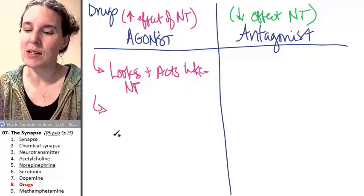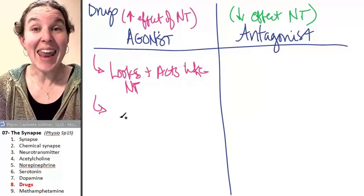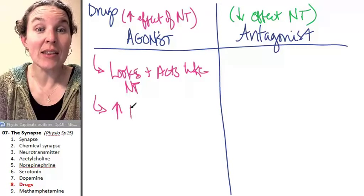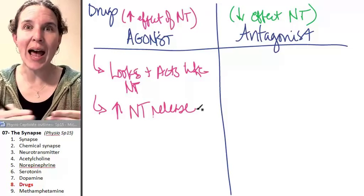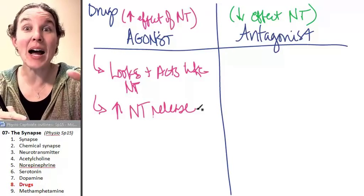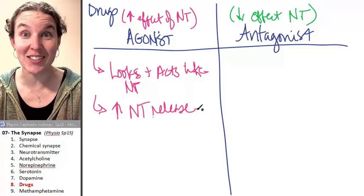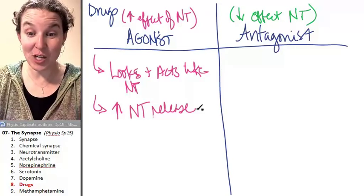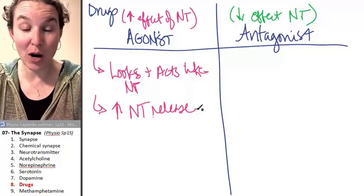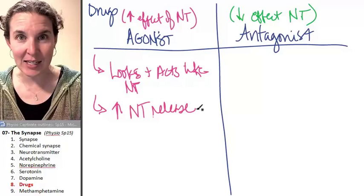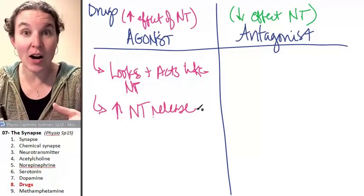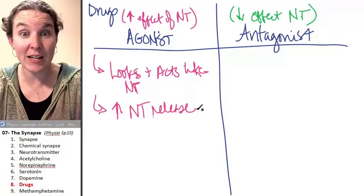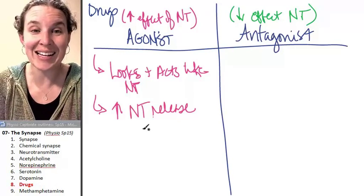What else can it do? An agonist could increase the neurotransmitter release. So an agonist could come in and bind to calcium channels and open up calcium channels, allow more calcium in, release more neurotransmitter. It increases the amount of neurotransmitter in there and so increases the effect of that neurotransmitter. That's an agonist action.